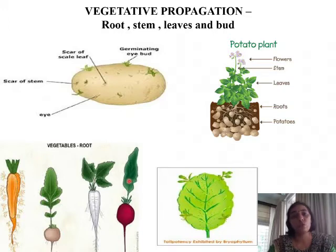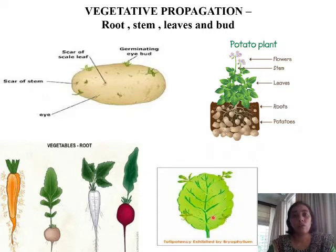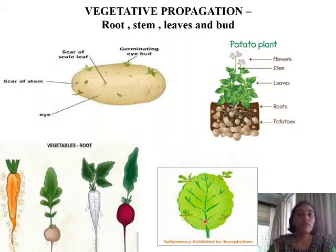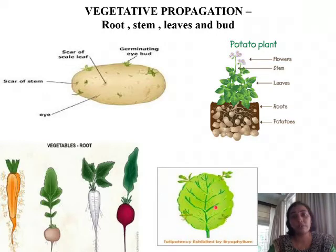Carrot and radish are roots which we consume, and they can be used to form new plants. So here root becomes a vegetative part. We also have bryophyllum — the bryophyllum leaf develops buds on the margin of the leaf, and these buds eventually give rise to new plants. So here the leaf is acting as a vegetative part, because new plants are formed on the leaf.